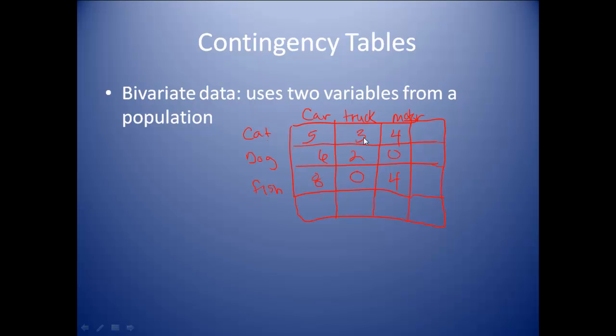Okay, the numbers on the inside here represent how many people were in each category. So this three, for instance, represents that there were three people that answered they drive a truck and have a cat. So this is our joint probability here of being a truck driver and having a cat.